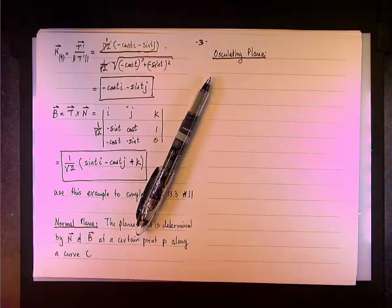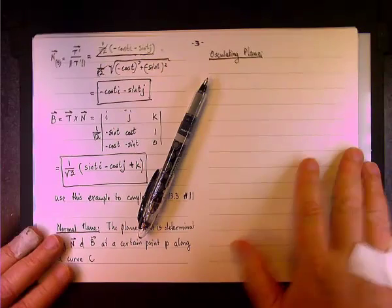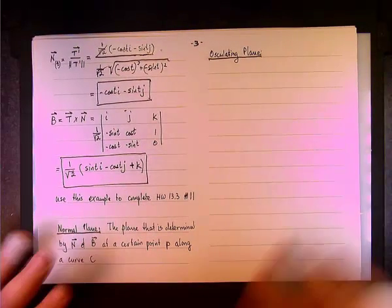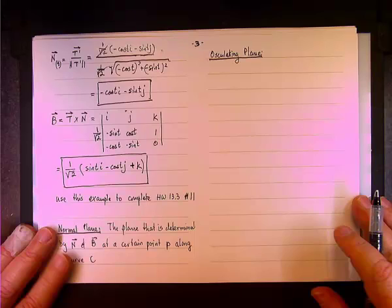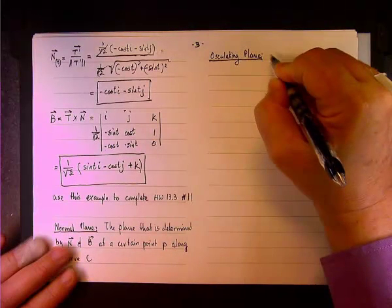Okay, so we're going to say that the oscillating or the tangent plane, oscillating plane, is determined by the tangent unit vector and the normal unit vector.